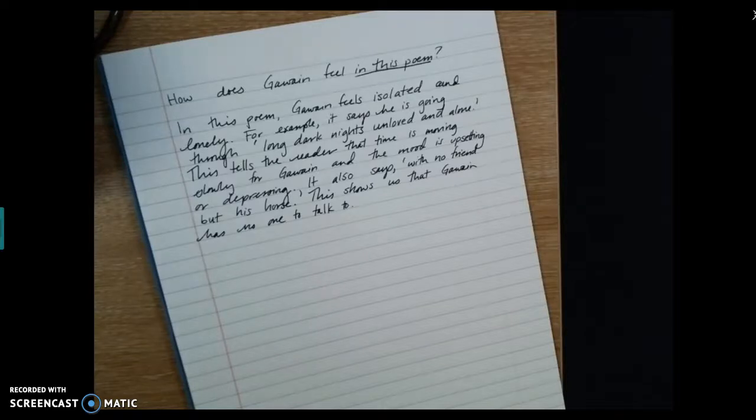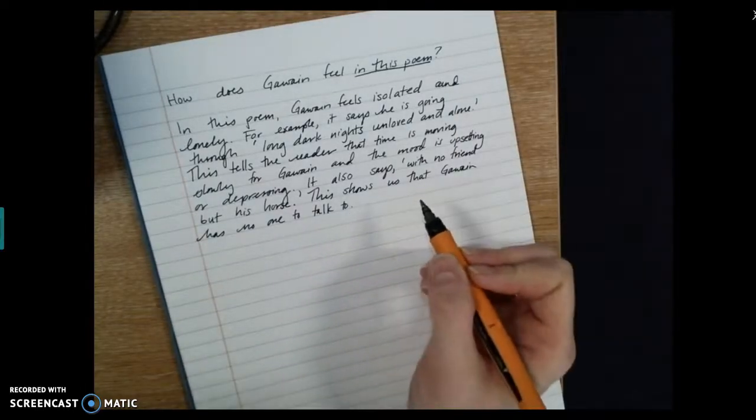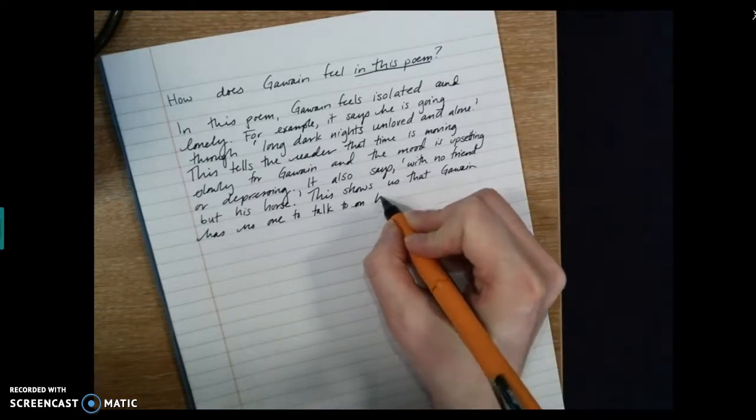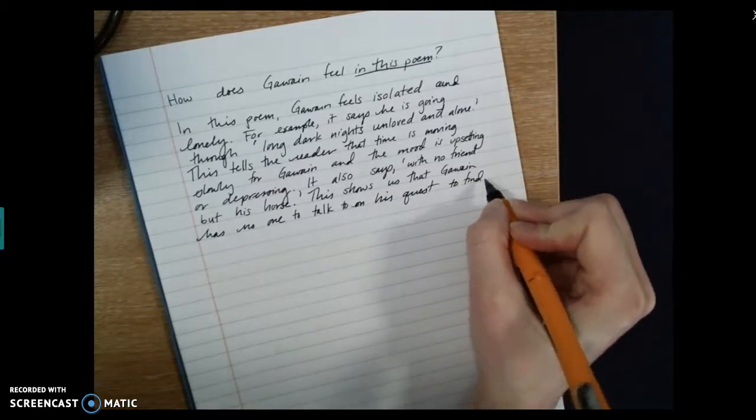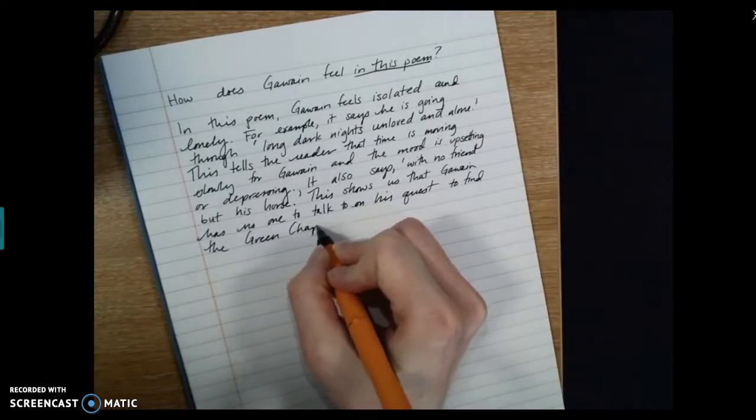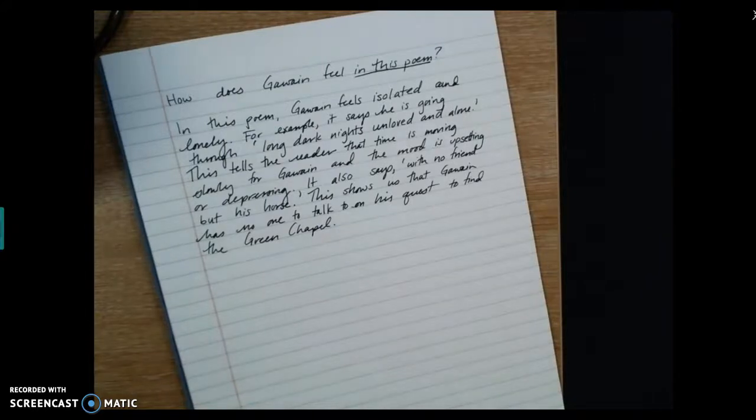Find the green chapel. The green chapel and the green knight. So I could just elaborate a little bit and show that I know what's going on in the poem by adding that. So I could say, this shows us that Gawain has no one to talk to on his quest to find the green chapel. Okay. And the bonus there is that I've shown that I know what's going on in the poem and I've used one of our vocabulary words, right? Okay. So that's how we do one of our paragraphs where we've got evidence and explanation an answer to a question for reading.